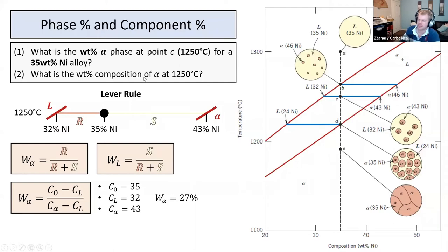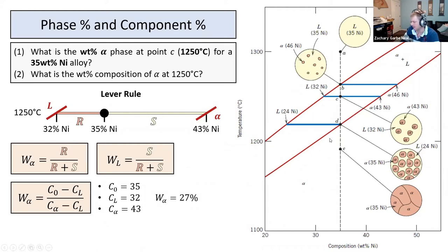What is the weight percent composition of alpha at 1250 degrees? In other words, what percentage is nickel and what percentage is copper that makes up alpha? All you need to do is look at the solubility limit at that given temperature — no math required. At this given temperature the solubility limit of nickel is 43% — you can't get higher than 43% at that temperature. The liquid, on the other hand, has a weight percentage of 32% nickel.